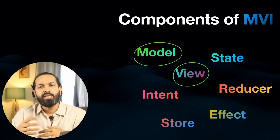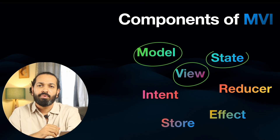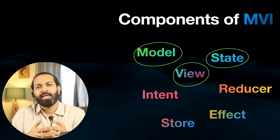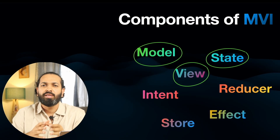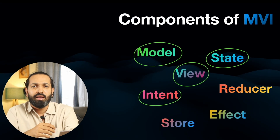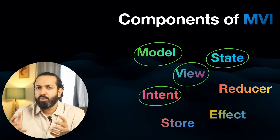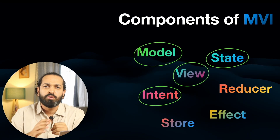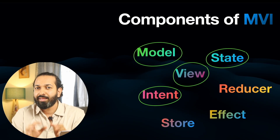Then comes the state. This represents the current truth of your screen. It includes models and UI flags like isLoading or selectedTab. Think of it like a snapshot of what the screen looks like right now. Then comes intent. Intents are user actions — things like tapped increment, pull to refresh, selected some item, submitted some form. They describe what the user wants to do, not how it is done. That's the intent.